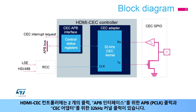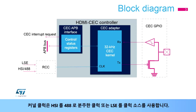Two clocks are available for the HDMI CEC controller: the APB clock or PCLK for the APB interface, and the 32 kHz kernel clock for the CEC adapter. The kernel clock can be derived from LSE or HSI divided by 488 clock sources.